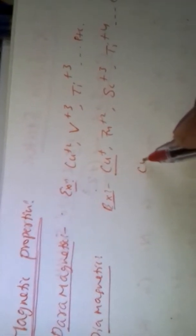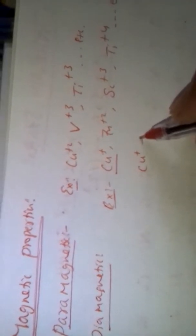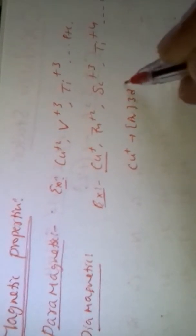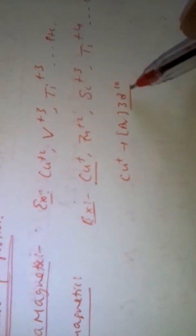For example, Cu+ has the configuration [Ar]3d10, which is a completely filled configuration, so it does not contain unpaired electrons and is diamagnetic. In the case of Cu2+, the configuration is [Ar]3d9, which contains one unpaired electron in the d sub-shell, so Cu2+ is paramagnetic.